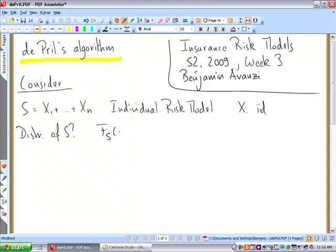The distribution function of S will, in this case, since the X's are iid, be the nth convolution of the random variable X.